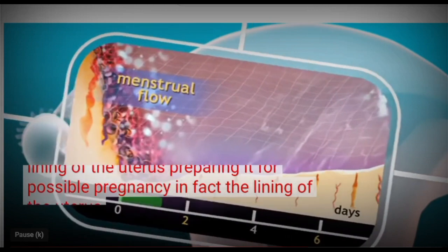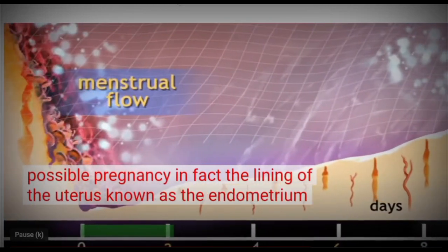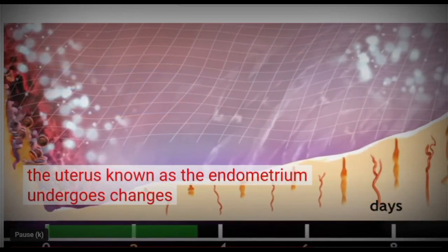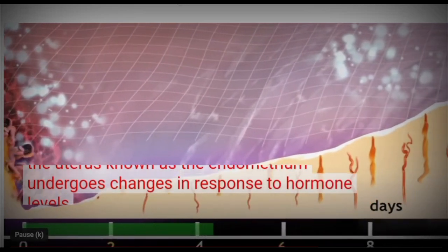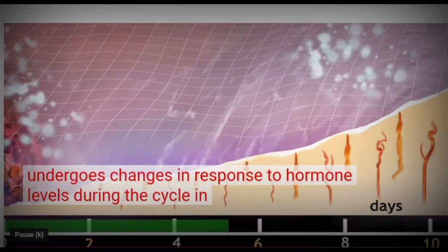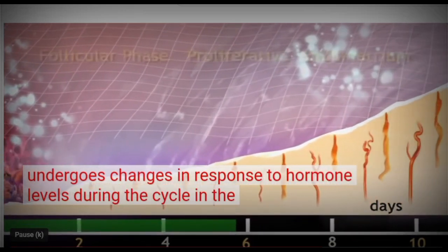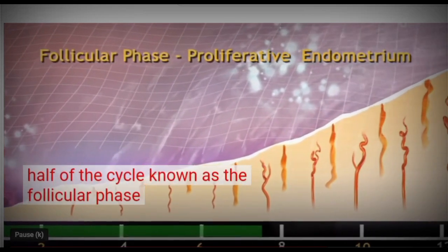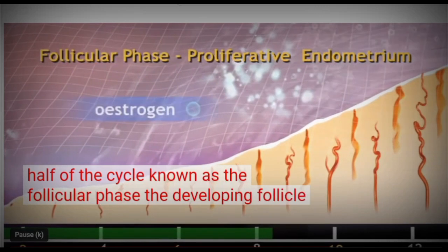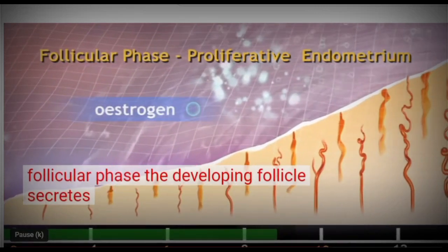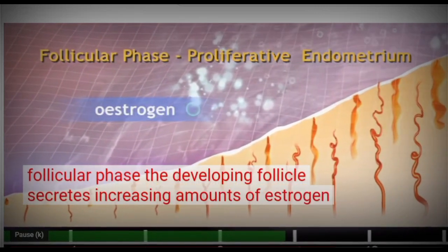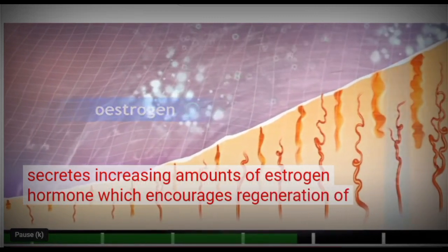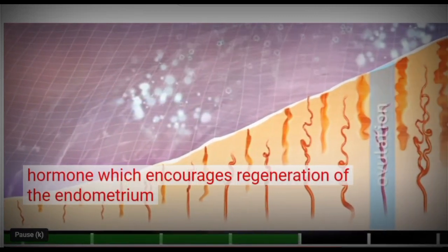The lining of the uterus, known as the endometrium, undergoes changes in response to hormone levels during the cycle. In the first half of the cycle, known as the follicular phase, the developing follicle secretes increasing amounts of estrogen hormone, which encourages regeneration of the endometrium.